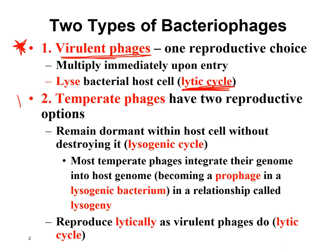The other type of bacteriophage is the temperate phages. Temperate means moderate, so they're a little bit nicer to the bacterial cells at first. They can do the lysogenic cycle and then also the lytic cycle. In the lysogenic cycle, they insert their viral DNA into the bacterial chromosome as the prophage, and they stay there for long periods of time until they sense the environment is not good and the bacterial cell is in trouble and going to die. Then the prophage cuts itself out of the bacterial chromosome, starts the lytic cycle, makes new virus, lyses the bacterial cell, and goes to find a new host cell to infect.